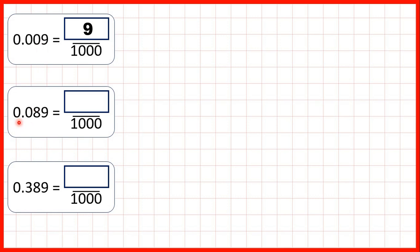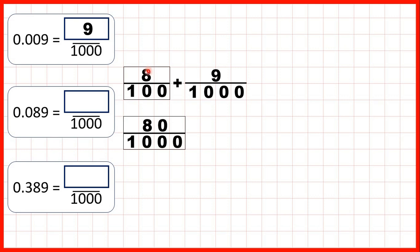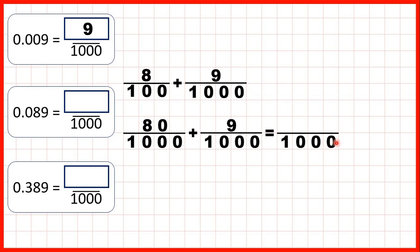Now let's take a closer look at 0.089. We have zeros in our ones and tenths place value columns, but we have an eight in our hundredths and a nine in our thousandths. Eight hundredths is the same as 80 thousandths — they're equivalent fractions because 100 times 10 is 1000, and what we do to the denominator we do to the numerator, so 8 times 10 is 80. We can then add nine thousandths, and with a common denominator, 80 plus 9 is 89. That's why 0.089 is 89 thousandths.